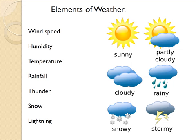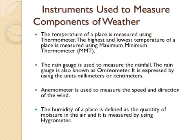Now we will study about instruments used to measure the components of weather. The temperature of a place is measured using a thermometer. The highest and lowest temperature of a place is measured with a maximum-minimum thermometer. The degree of hotness is measured by the thermometer.